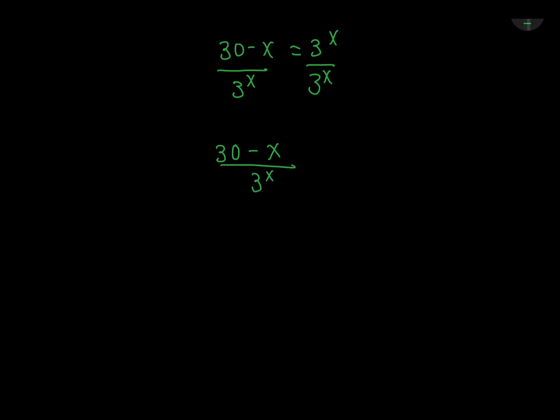3 to the power x divided by 3 to the power x is just 1. So this can be written as 30 minus x, multiplied by 3 to the power negative x. I think if I make the exponent of 3 equal to this, 30 minus x, it will help us.